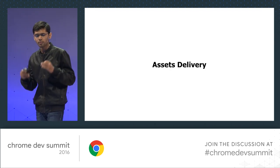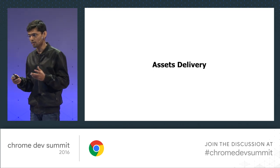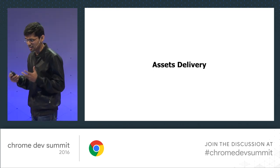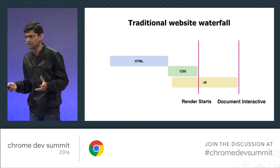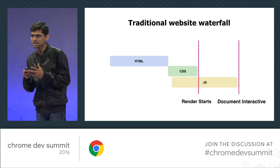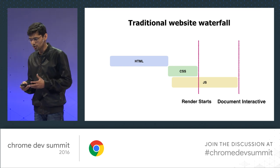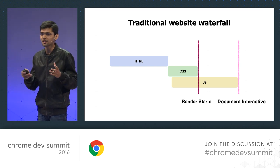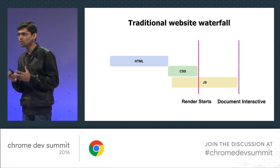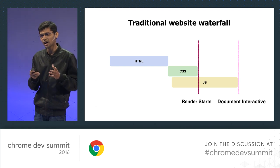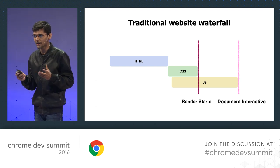Most other performance metrics actually depend on when your asset is delivered. This is a waterfall of a traditional website. First, your whole HTML loads, and then other asset requests go out. You have to wait for the whole HTML to load before making a request. When you analyze your code, you'll find a certain part that needs no computation or no API request.